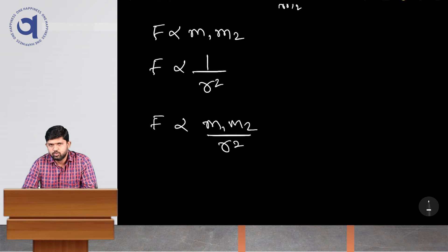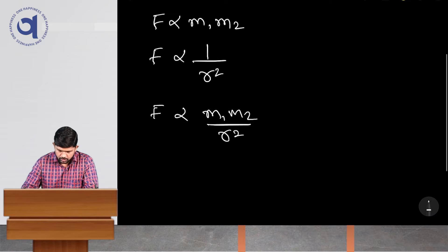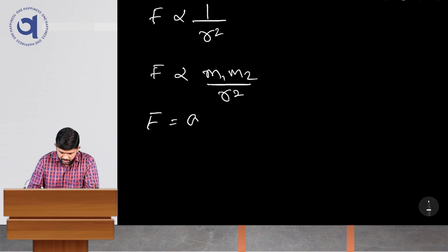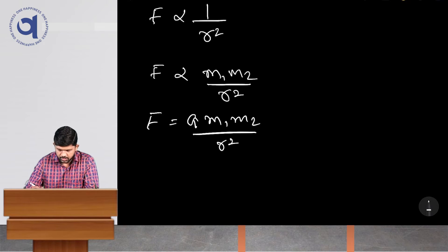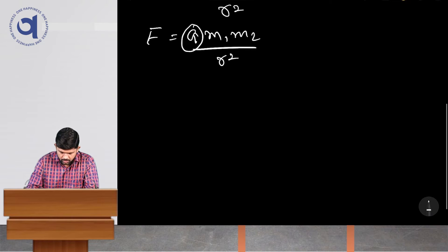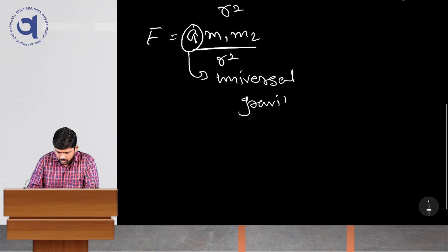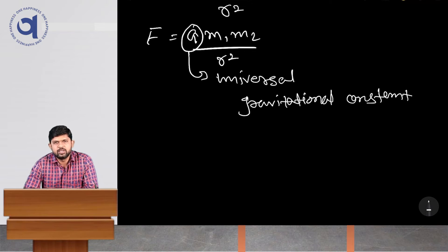Mathematically, if we remove the proportionality sign we need to introduce a constant. We write this constant as capital G. So the equation becomes F equals G M1 M2 divided by R squared, where G is called the Universal Gravitational Constant. It is called universal because the value of this constant remains the same everywhere in the universe.